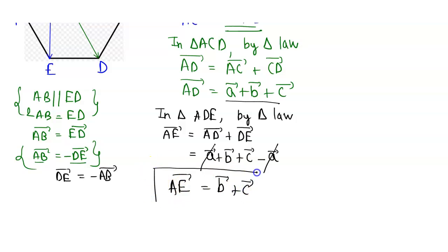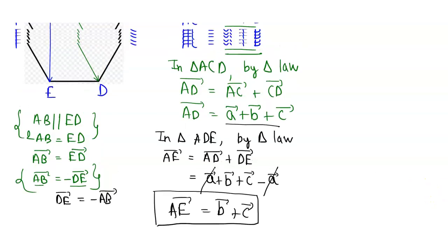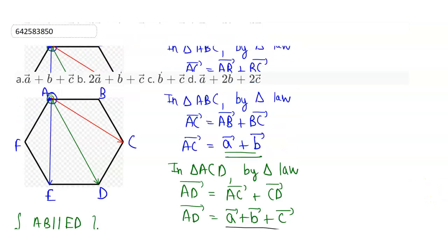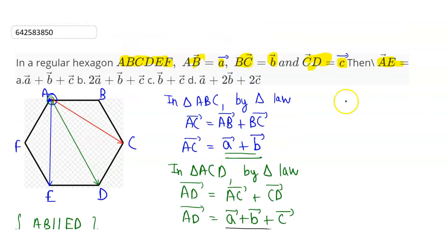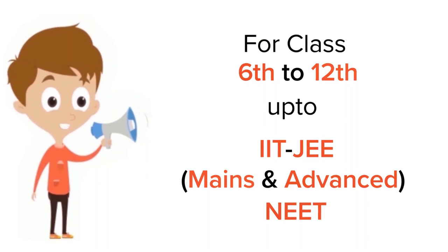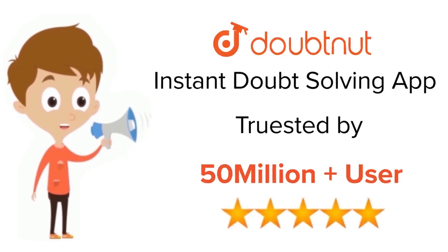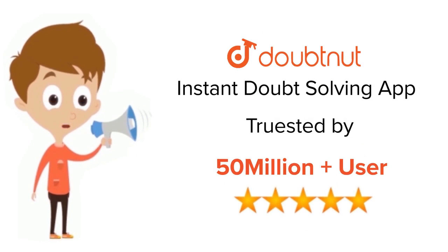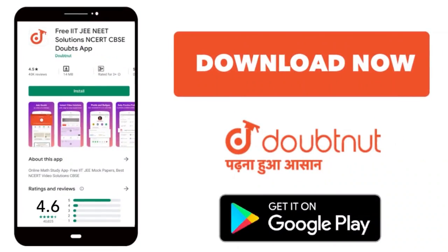So this is our required value. Looking at the options, option C is the correct answer, and this completes our solution. For class 6 to 12, IIT and NEET level — trusted by more than 5 crore students. Download Doubtnet app today.